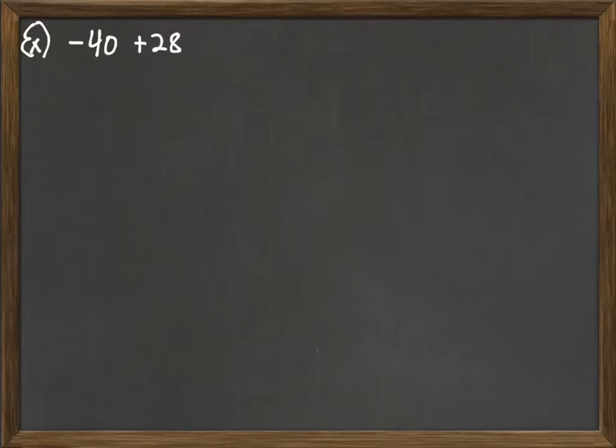Okay, so now we want to look at some examples where we're adding signed numbers. Again, remember that idea. If they have the same sign, we'll add them up and keep that sign. Otherwise, we'll subtract and keep the sign of the larger number.